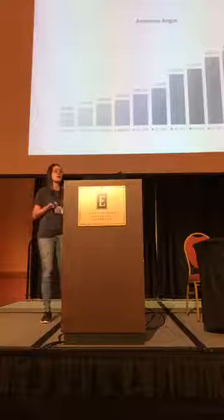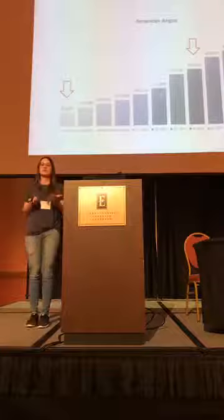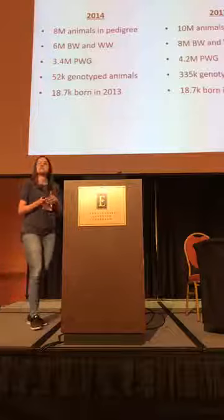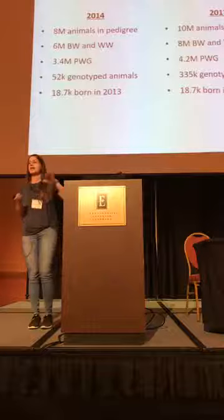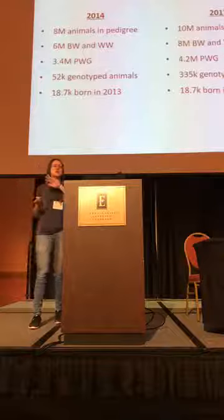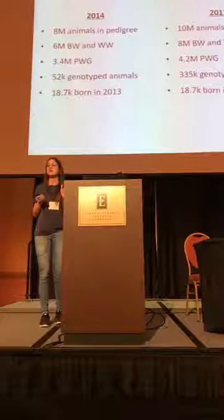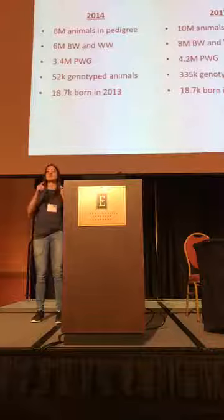We did some validation back in 2014 and also in 2017 to see how genomic information and single-step was performing. For the 2014 dataset, we had about 8 million animals in the pedigree, 6 million records for birth weight and weaning weight, 3 million records for post-weaning gain, 52,000 genotyped animals. We validated on animals born in 2013 — about 18,000 young animals — by removing phenotypes from those animals, running the traditional evaluation and single-step, then seeing which one did a better job predicting future performance.